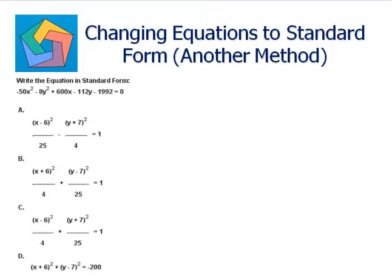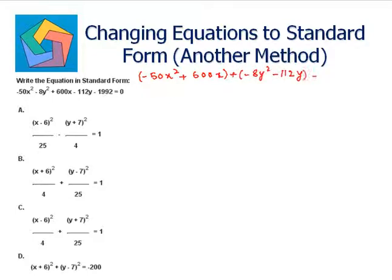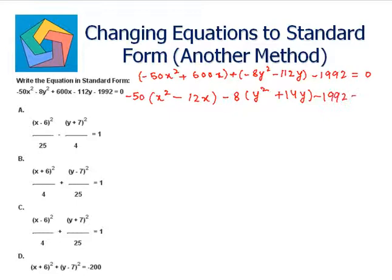Next problem: write the equation in standard form — minus 50x squared minus 8y squared plus 600x minus 112y minus 1992 equals 0. Clubbing terms: minus 50x squared plus 600x plus minus 8y squared minus 112y minus 1992 equals 0. Taking minus 50 common from x terms and minus 8 common from y terms: minus 50(x squared minus 12x) minus 8(y squared plus 14y) minus 1992 equals 0.